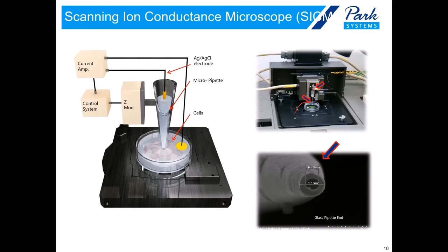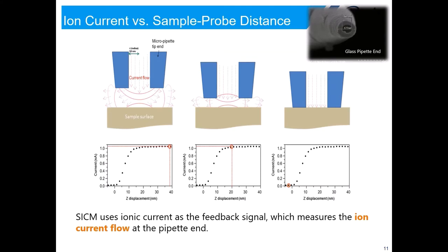Now, with advanced capabilities like ARS — Approach Retract Scanning Mode — we have a working version of SICM. The pipet inner diameter is typically 20 to 100 nm. Through this pipet opening, ions flow to generate current. The ion current through the pipet depends on a combination of the resistance of the micropipet itself and the excess resistance of the micropipet opening. When the pipet is far from the sample surface, ion current is mainly determined by the resistance of the micropipet. But if the distance between pipet and the sample surface decreases, the current begins to be affected by the excess resistance of the opening and starts to decrease. A distance-modulated feedback control system keeps the ion conductance constant and the pipet-sample distance also remains constant.